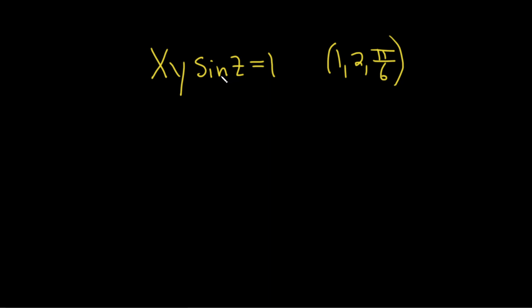So we're looking for the equation of the tangent plane to this surface solution. The very first thing we're going to do is set it equal to 0. So we'll subtract 1 from both sides. Minus 1 equals 0.